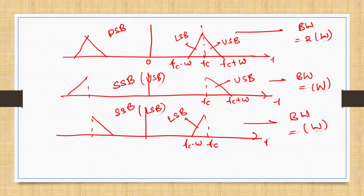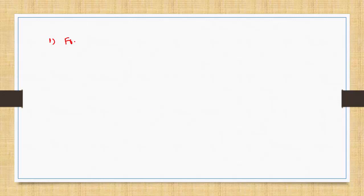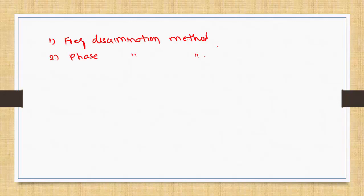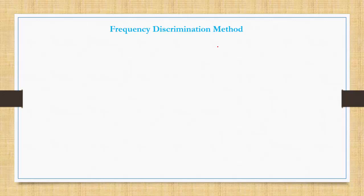Obviously if we are saving something, something opposite should occur. This transmission bandwidth saving comes at the cost of the complexity of the transmitter and receiver. To generate SSB waveforms there are two methods: one is the frequency discrimination method, and the second is the phase discrimination method.